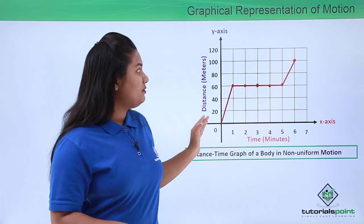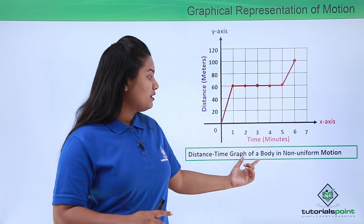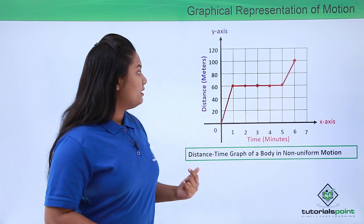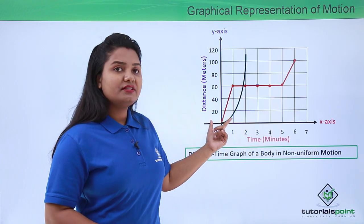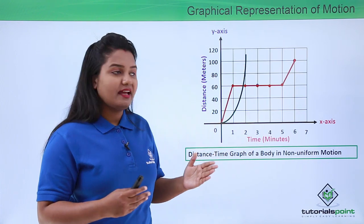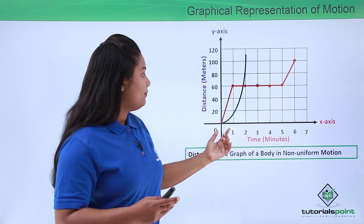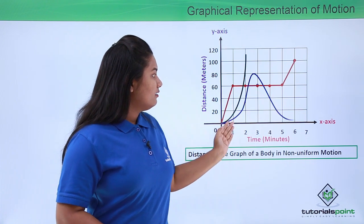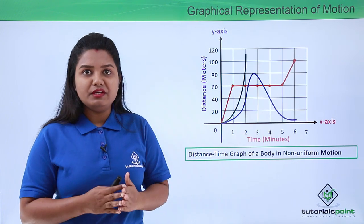A distance-time graph that is not a straight line as a whole represents a body with non-uniform motion. Not only the hare's type of graph, but even a curved distance-time graph — one that is not a straight line — can also represent a body moving with non-uniform motion.